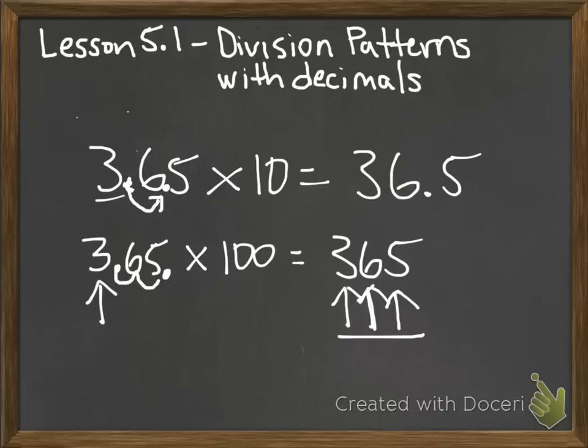Same holds true here. Since we multiplied it by 10, that decimal moved over one place, so therefore we had one extra number on that whole side of the decimal. Now, the same concept holds true when we are dividing by powers of 10. Let's take a look.